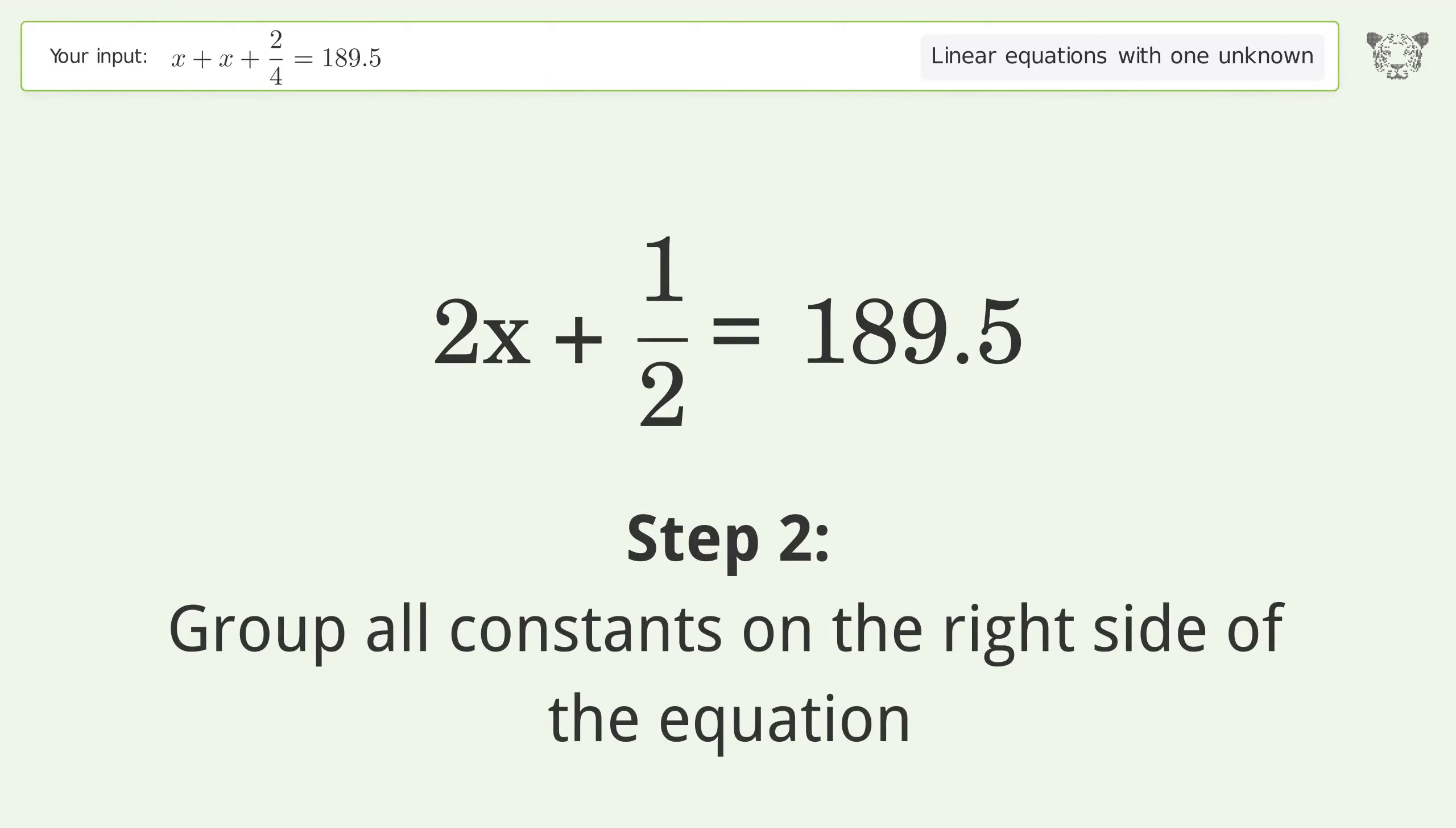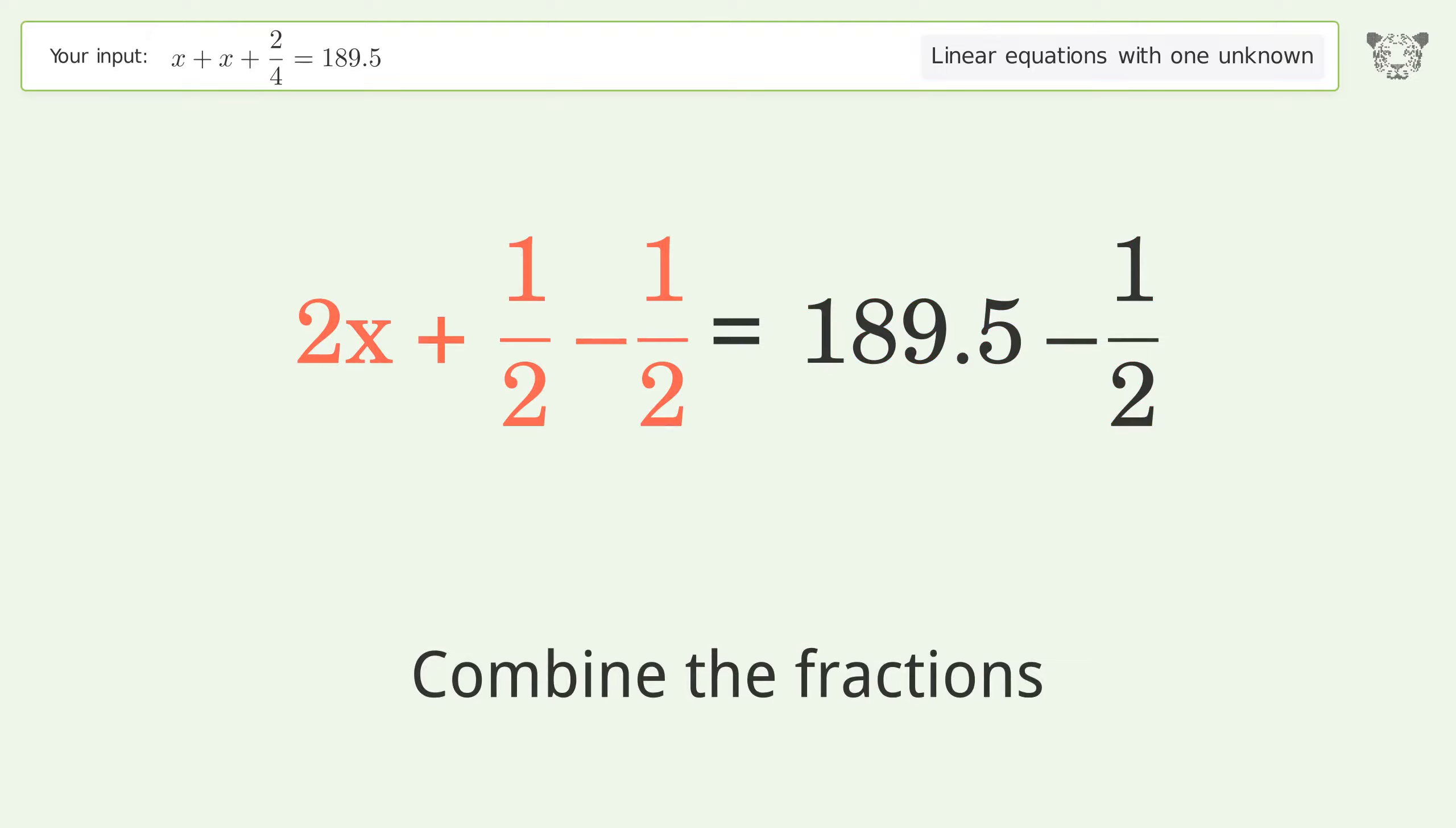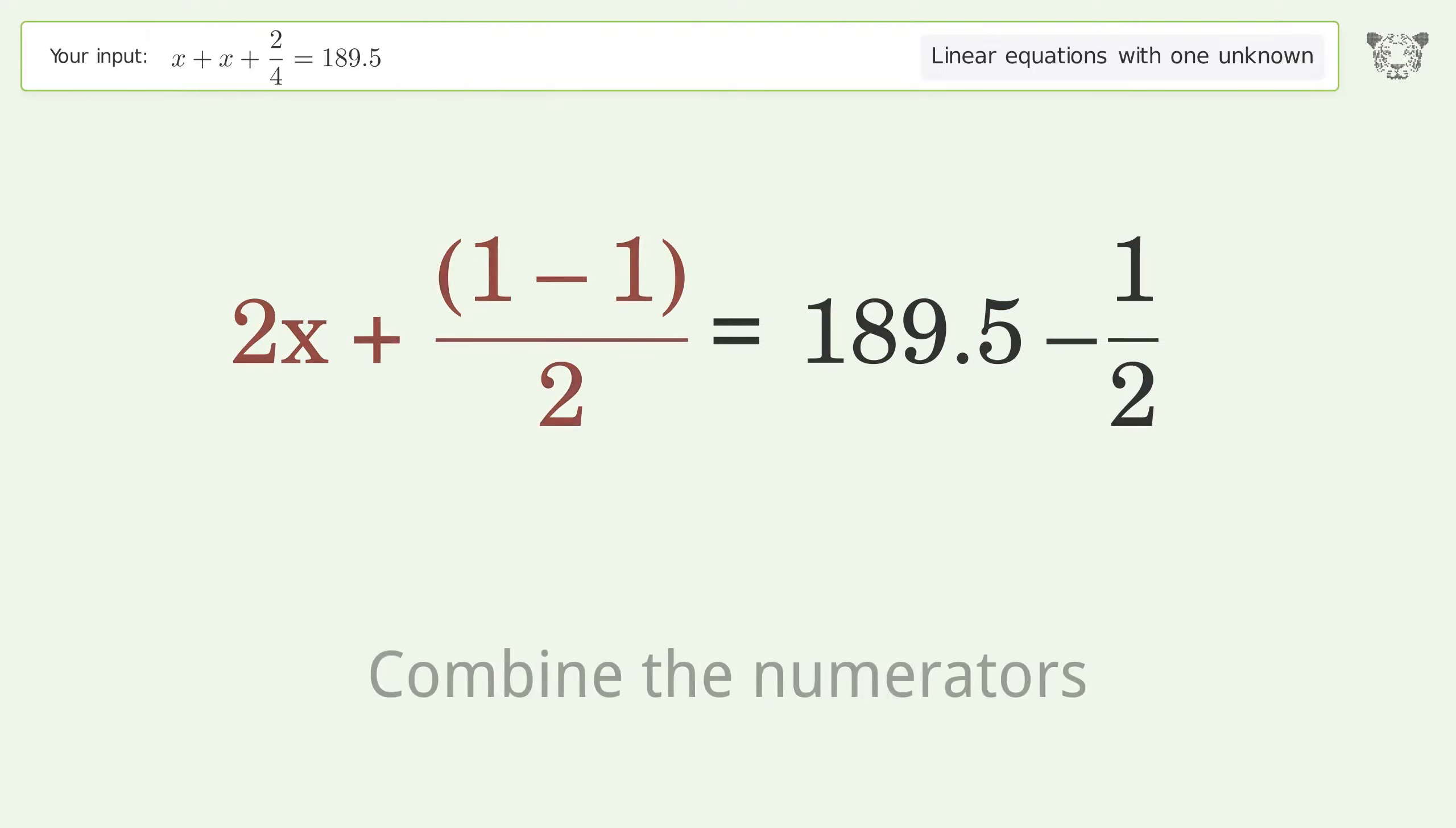Group all constants on the right side of the equation. Subtract 1 over 2 from both sides. Combine the fractions. Combine the numerators.